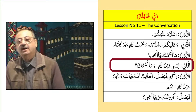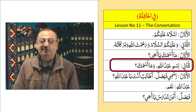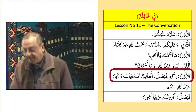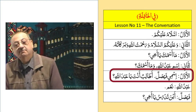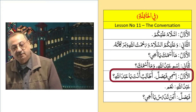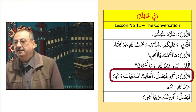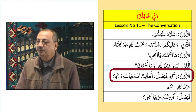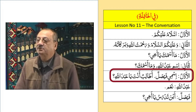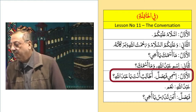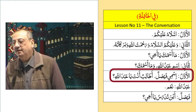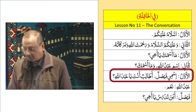Then: 'Wa masmuka?' — 'And what is your name?' The answer: 'Ismi Faisalun.' Again, Ismi is Mudaf and Mudafilihi. Our Mubtada is Ismu (Mudaf), Ya mutakallam is Mudafilihi. And our Khabar is Faisalun.